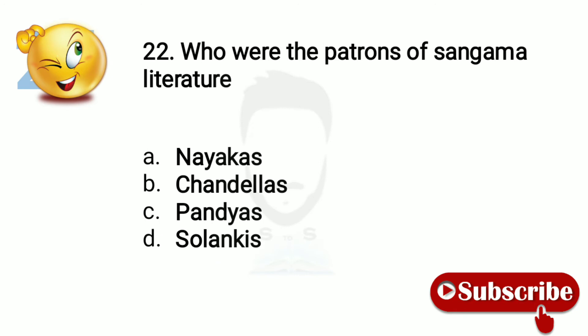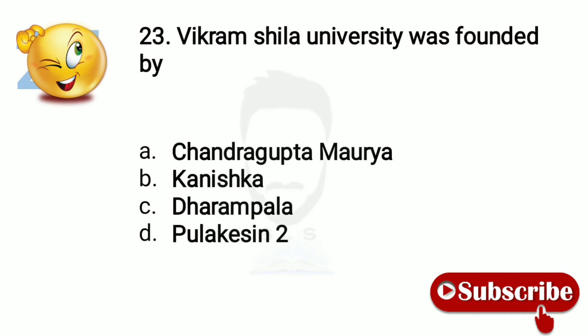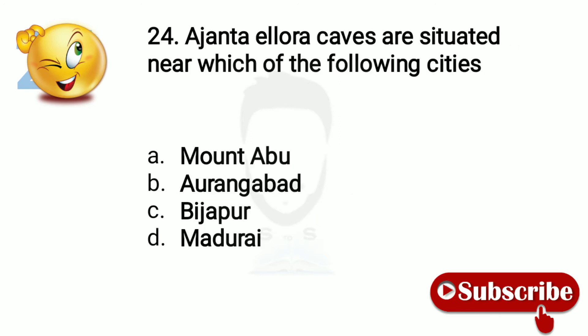Question 21: Who were the patrons of Sangama literature? Option number C, Pandyas. Question 22: Vikramshila University was founded by — Dharmapala. Question 23: Ajanta rock caves are situated near which of the following cities? Option number B, Aurangabad.